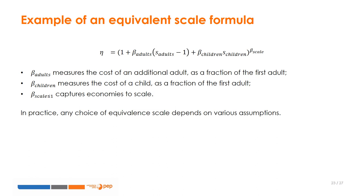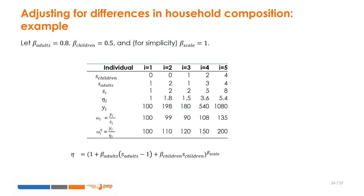Of course, any choice of equivalent scale depends on various assumptions and so can be subject to debate. Here we provide a very simple example of adjustments for household composition using the per capita and the adult equivalent approaches. We assume that the cost of additional adult is equal to 0.8, i.e. 80% of a single adult; that of one child is 0.5, half of a single adult; and that there are no economies of scale, so beta scale equals 1. We estimate the per capita and adult equivalent welfare indicators. As shown in this example, these adjustments render total household expenditure comparable across households of different size. However, the choice of adjustment — per capita versus adult equivalent — affects the results significantly, which can affect the ranking and the poverty measures.